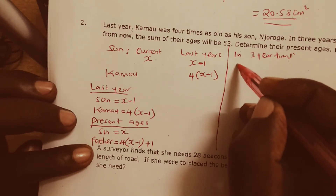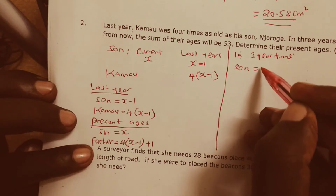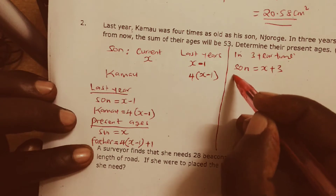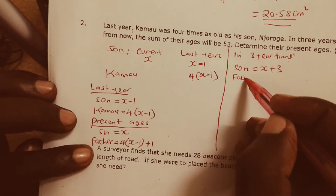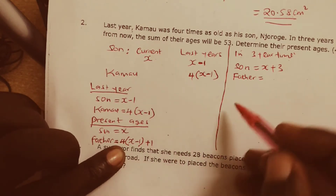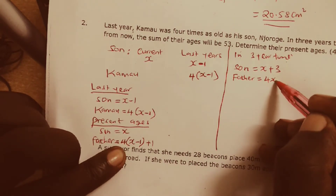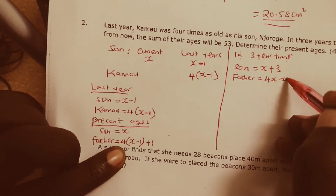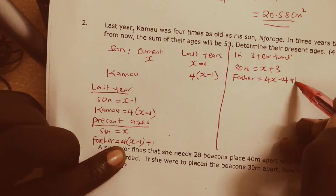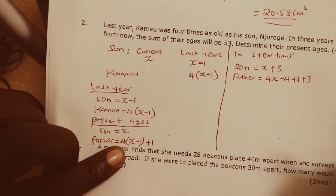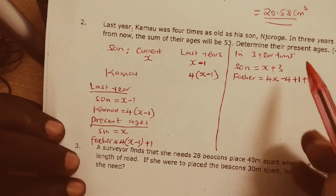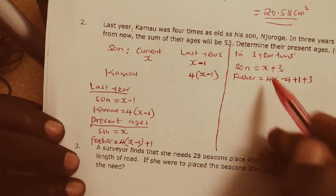So in three years' time, the son will be X plus 3. The father, who is Kamau, would be equal to the present age: four X minus 4 plus 1, giving us four X minus 3. Then in three years' time, we add three more years to the father. The sum of their ages in three years' time will give us 53.